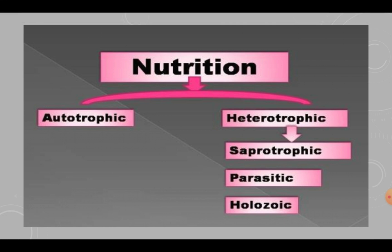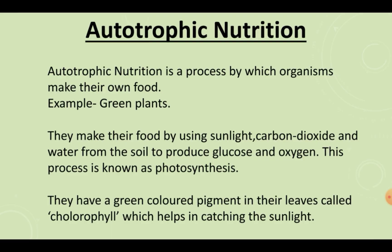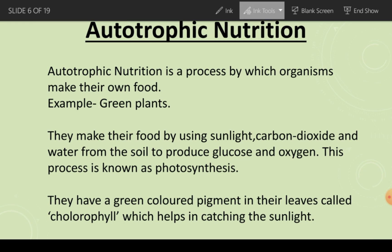Autotrophic nutrition is a process by which organisms make their own food, like green plants. How do they make their food? They make their food by using sunlight, carbon dioxide, and water from the soil.